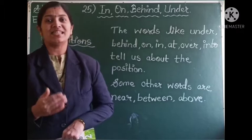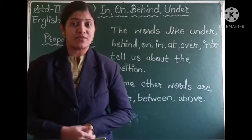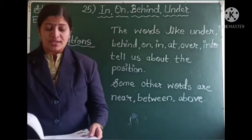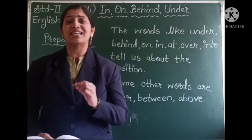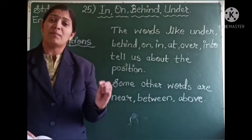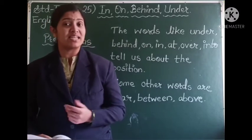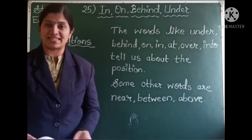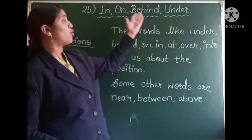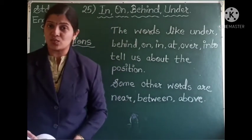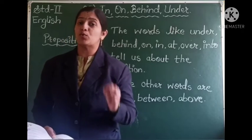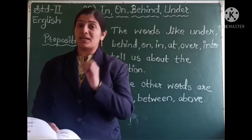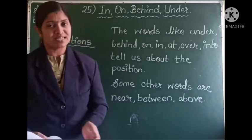So students, in the sentences we just read, we saw that words like over, on, in, and under are telling us about the position of the pets. We have seen that Mala has six pets and her pets are at different positions or different places. These words — in, on, behind, under, over — have told us about the position or the place where these pets are staying, sitting, or standing.